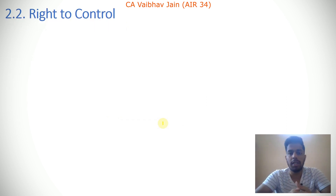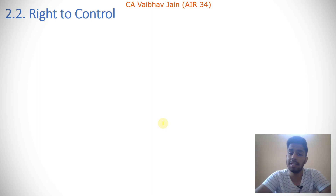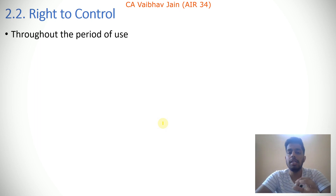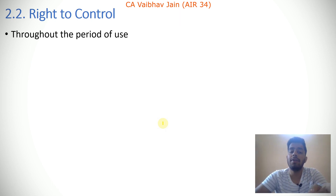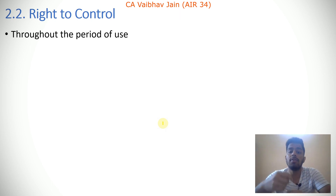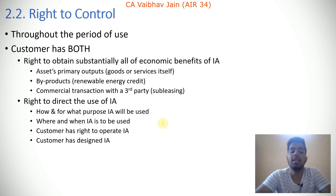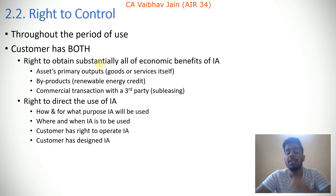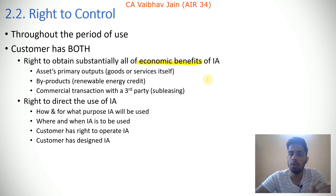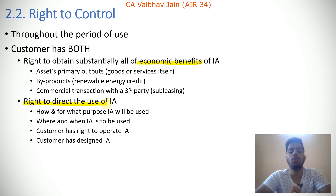Right to control is important because if there is no right to control transferred from the lessor to the lessee, it cannot be termed a lease contract. The right to control must be present throughout the period of use. If the customer has the right to control for only one year out of a two-year lease, the lease will only cover that one year. Right to control means the customer must have both: the right to obtain substantially all of the economic benefits of the identified asset, and the right to direct the use of the identified asset.